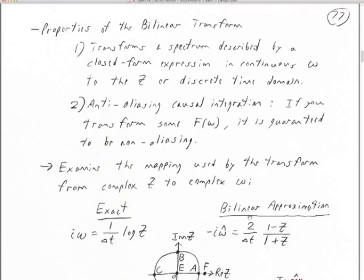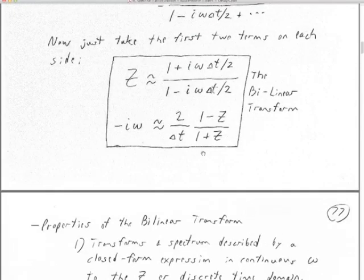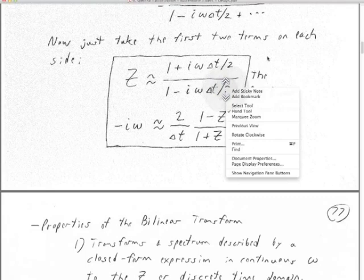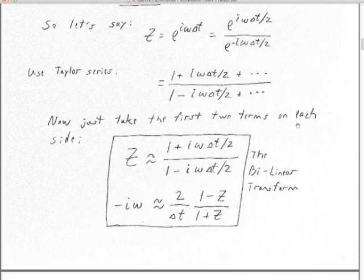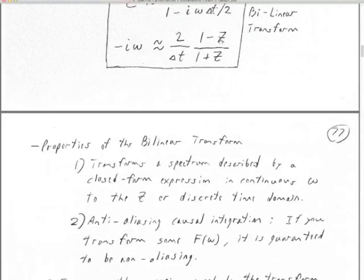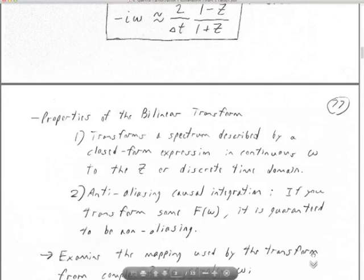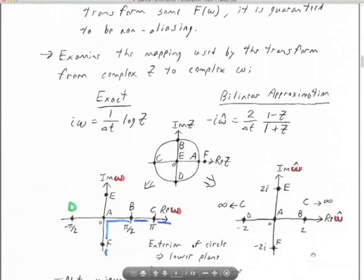If you take some f of omega in continuous omega, you could end up with a filter that does aliasing, because in continuous omega the filter is described at frequencies way above your Nyquist frequency — up to infinite frequency. But because we take it directly to z and cut off those other terms, that's removed the potential for aliasing. The filter we end up with is guaranteed to be non-aliasing.